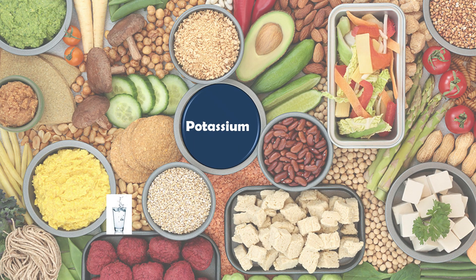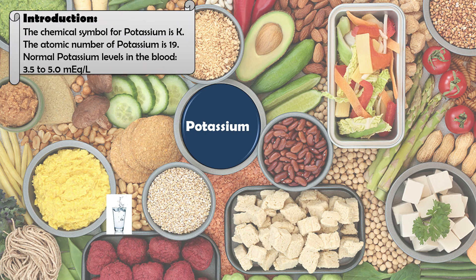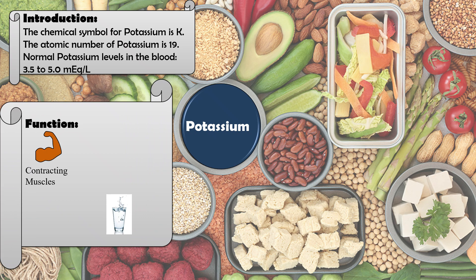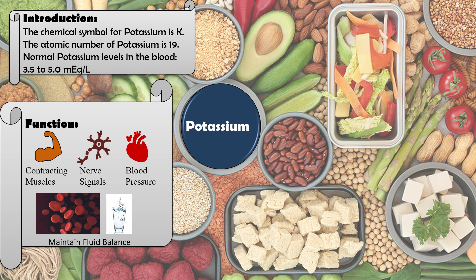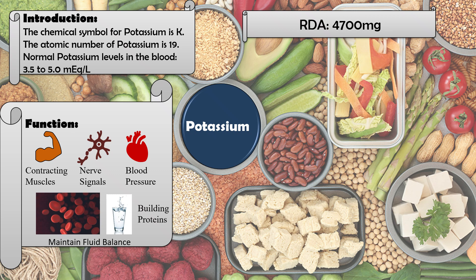The symbol for potassium is K and the atomic number is 19. The normal level of potassium in the blood is 3.5 to 5.0 mEq/L. Potassium is involved in muscle contraction, nerve signal transduction, dilating blood pressure, maintaining fluid balance, and building proteins. The RDA for potassium is 4700 mg.